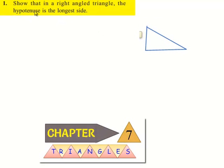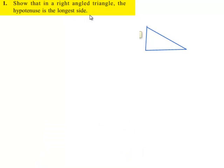Moving on to the first question: show that in a right angle triangle, the hypotenuse is the longest side.